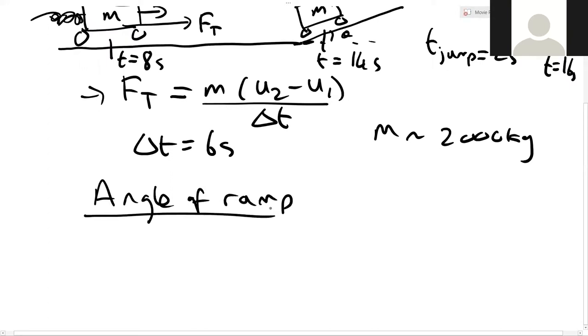So how do we do that? Well, we use trigonometry. So if we look at that clip, you can see that the height of it is about one person, which is about two meters. The hypotenuse of the ramp is about one and a half cars. So one and a half cars is about six meters.